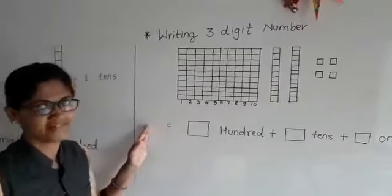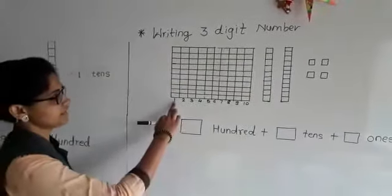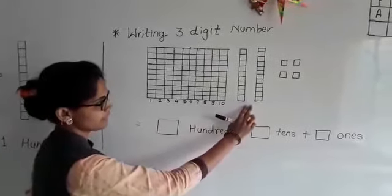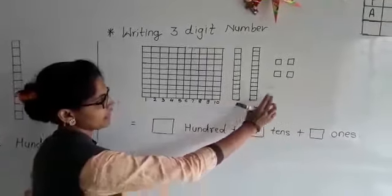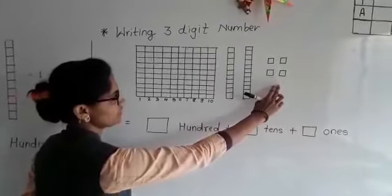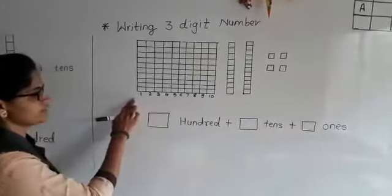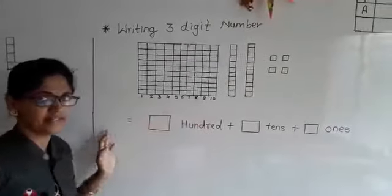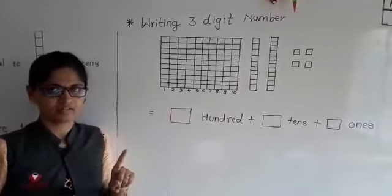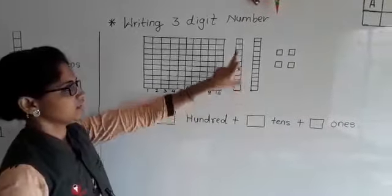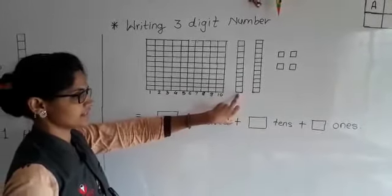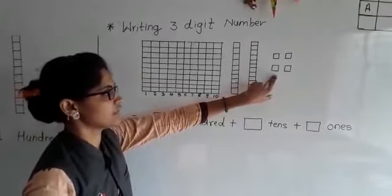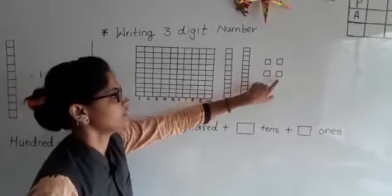Writing 3-digit numbers. See, here is a box representing hundreds. This column represents tens, and these squares represent ones. We already know these boxes are tens. Ten tens means one hundred. Here are tens, two tens, and here are some ones: 1, 2, 3, 4.